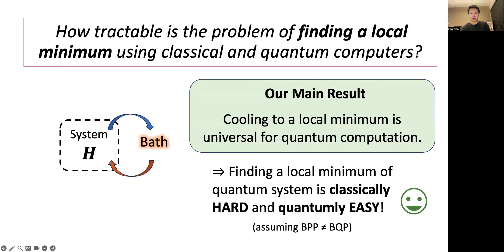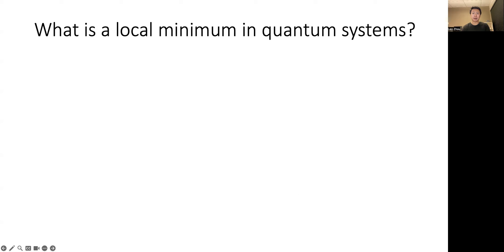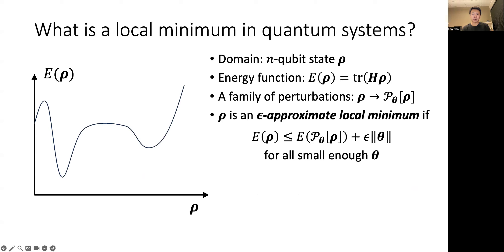I will now delve into our result in more detail, but first we need to define what we mean by a local minimum in quantum systems. Consider the domain of all n-qubit states specified by density matrix rho. Each state is assigned an energy from a Hamiltonian H that governs the quantum system. To set the energy landscape, we also need to specify a family of perturbations that enable you to move between quantum states, with vector theta that parametrizes the strength and direction of the perturbation. Then we say a state rho is an epsilon approximate local minimum if perturbing the state in any direction can only increase its energy for all small enough theta, up to an error that scales as epsilon times the perturbation strength.